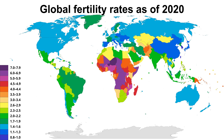The lowest levels of fertility are found in developed parts of East and Southeast Asia — Singapore, Hong Kong, and South Korea — with South Korea having the lowest fertility rate in the world at 0.84. That's less than one child on average per woman.